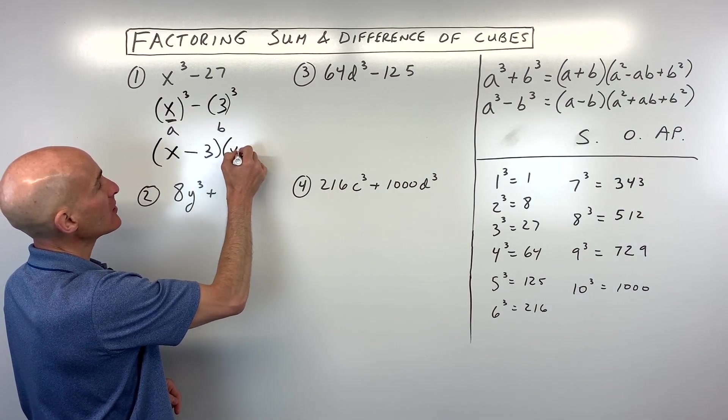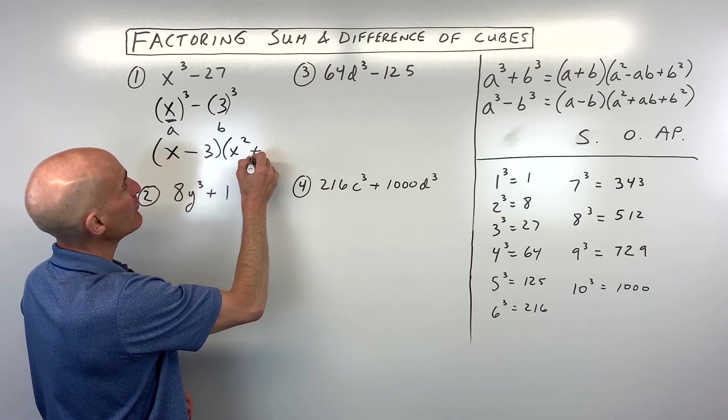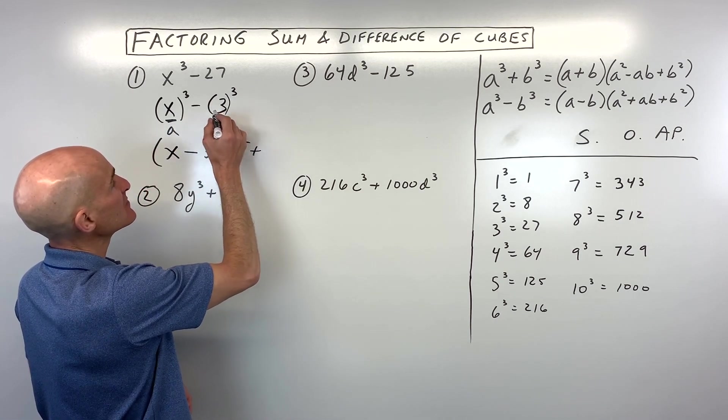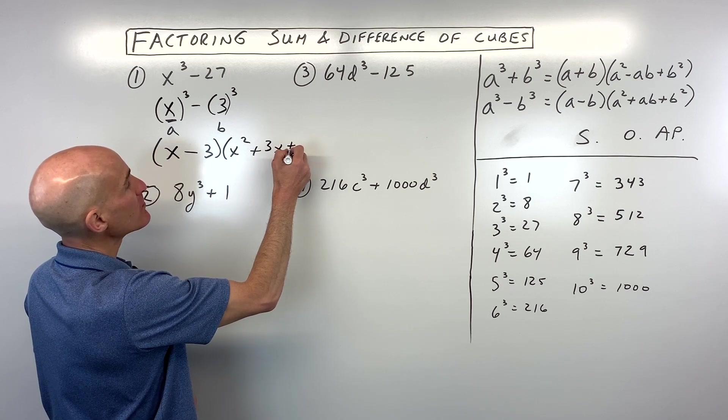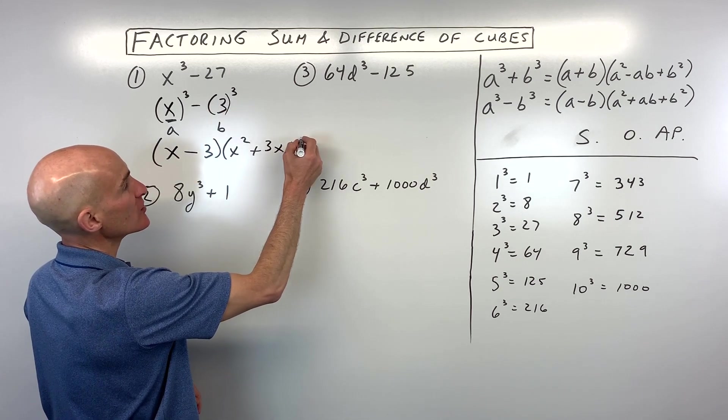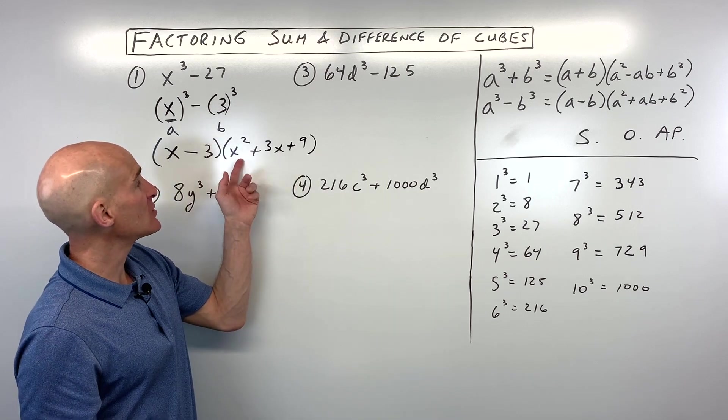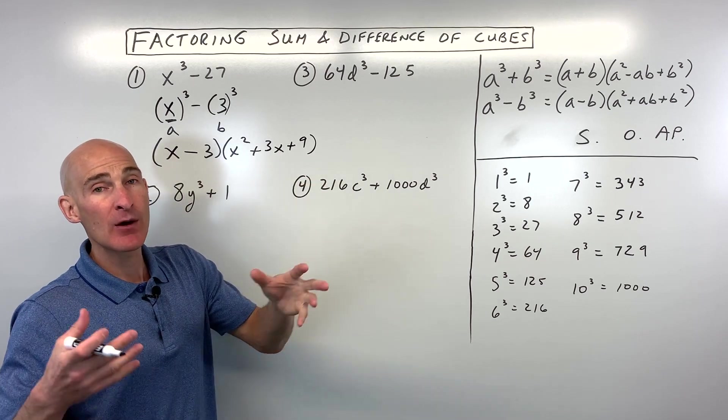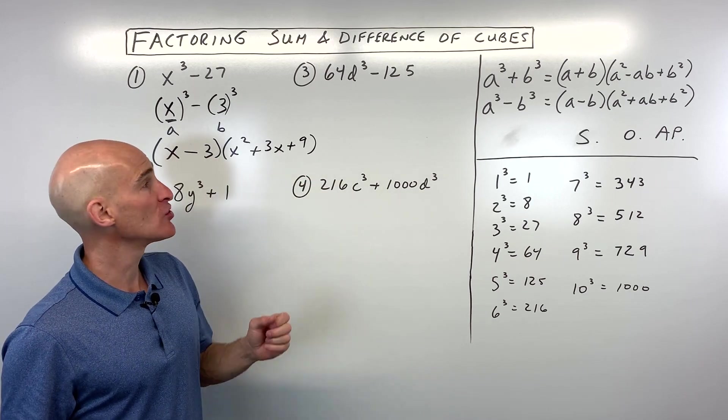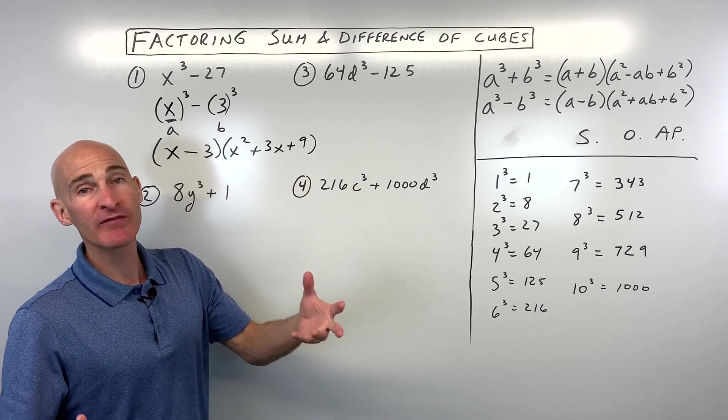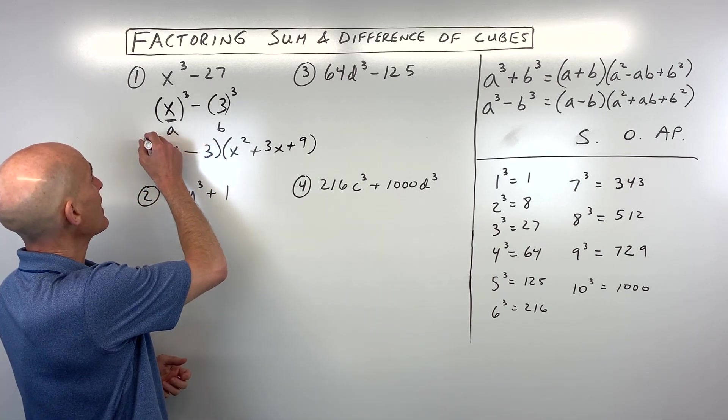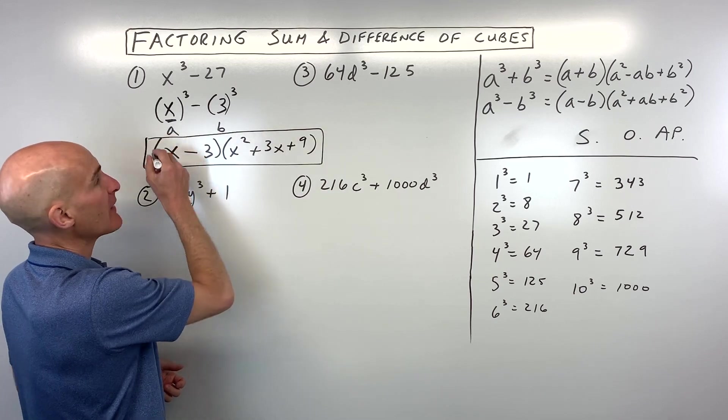Then x², the opposite sign, plus A times B, which is 3x, always positive, B². So 3 times 3, which is 9. Now, a lot of students will say, well, Mario, can't you factor this trinomial further? And when you're doing these sum of two cubes and difference of two cubes, this won't be able to be factored any further. That's as far as we can go. So this is your final result and you've got it factored.